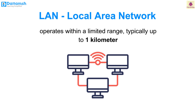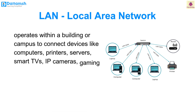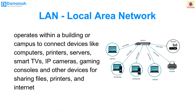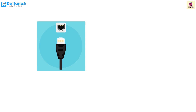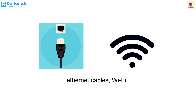A Local Area Network (LAN) operates within a limited range, typically up to 1 km. It operates within a building or campus to connect devices like computers, printers, servers, smart TVs, IP cameras, gaming consoles and other devices for sharing files, prints and internet. LANs can be set up using Ethernet cables or Wi-Fi.